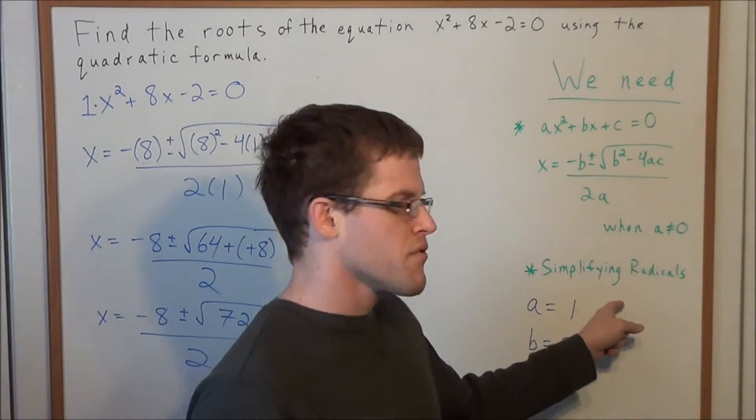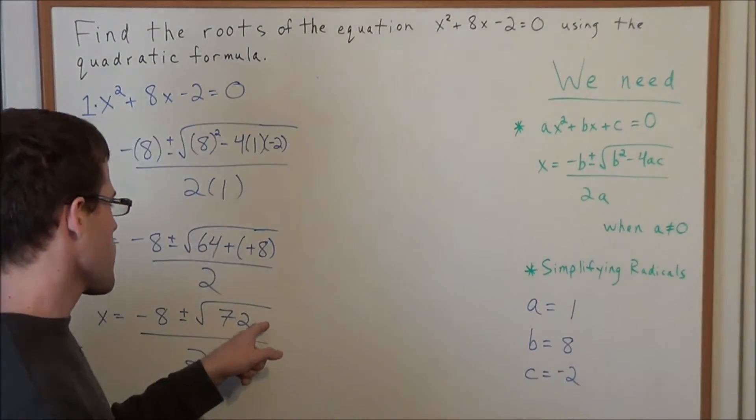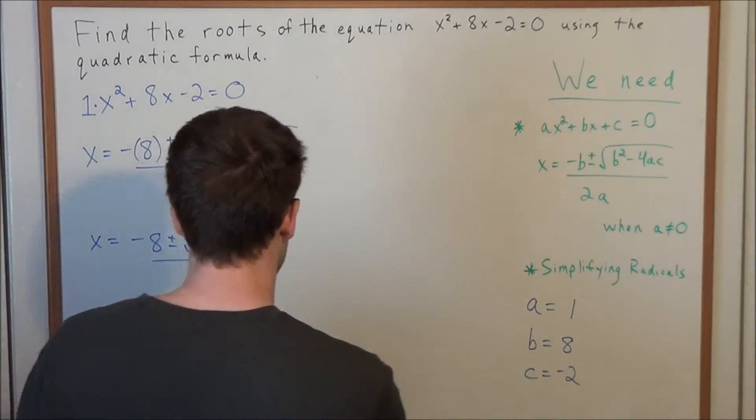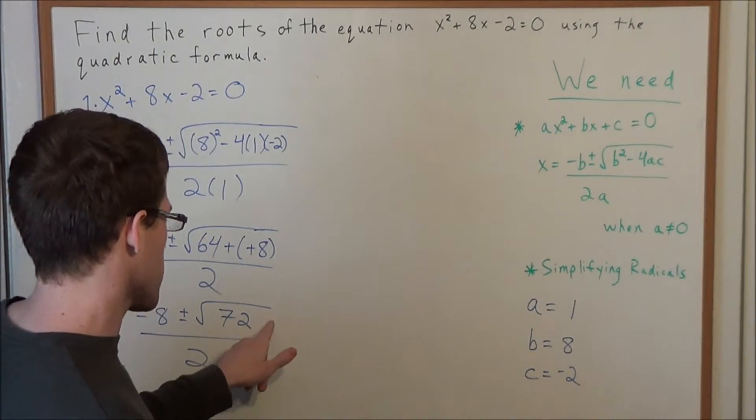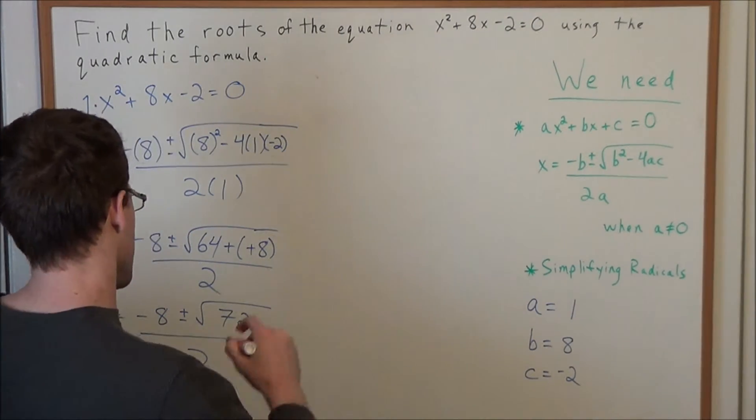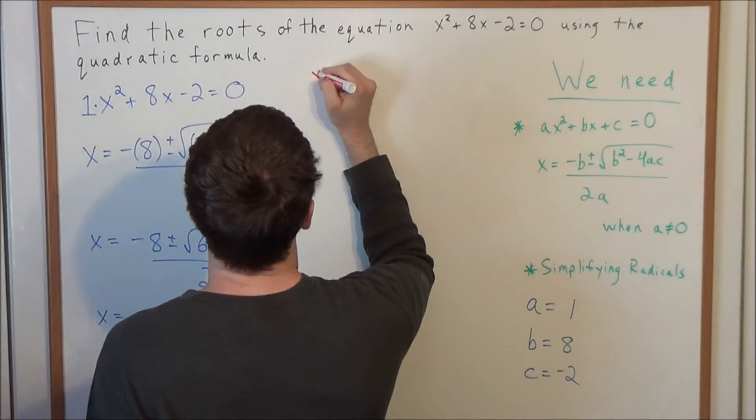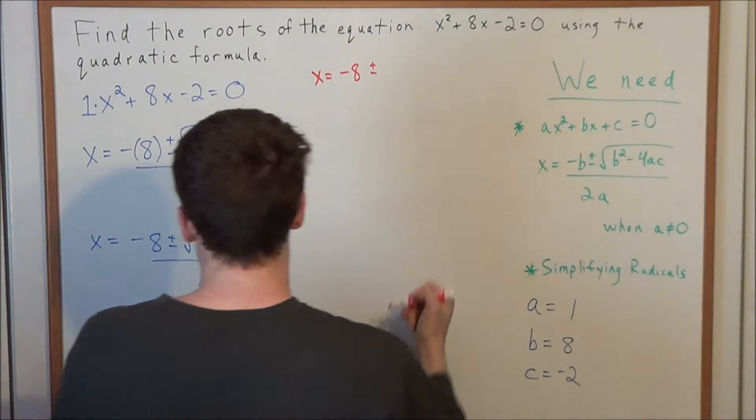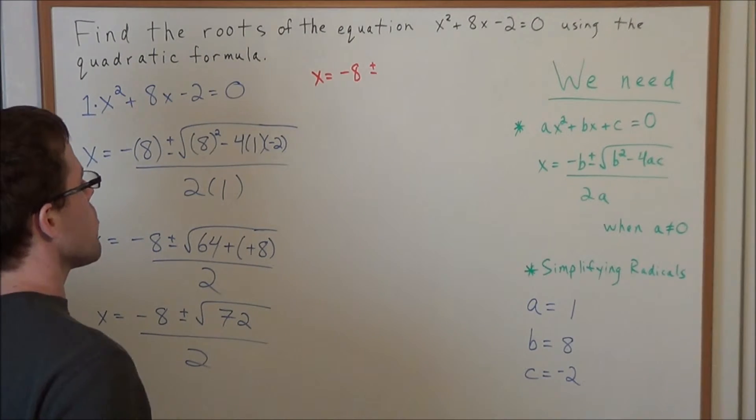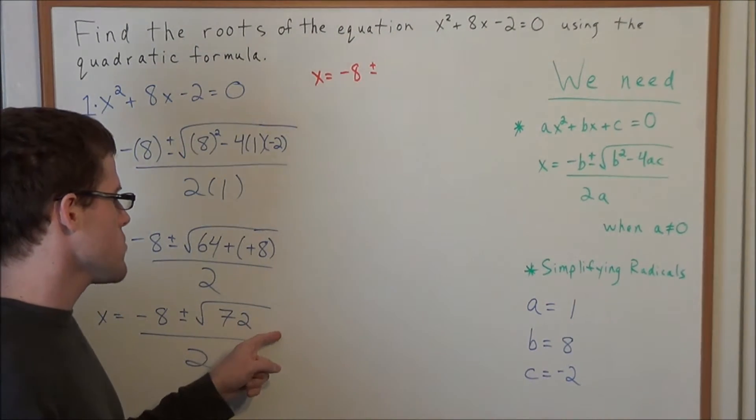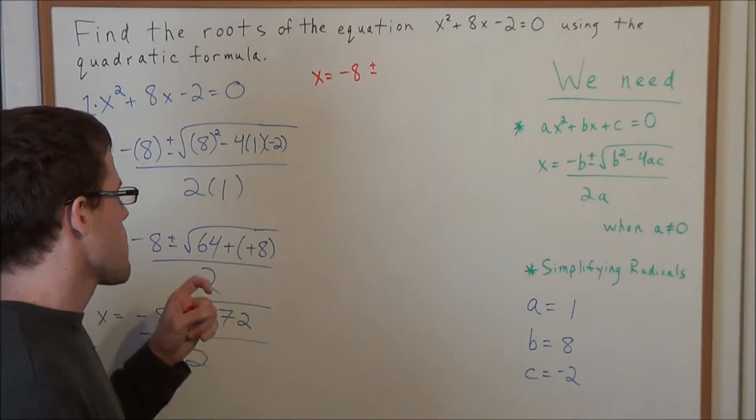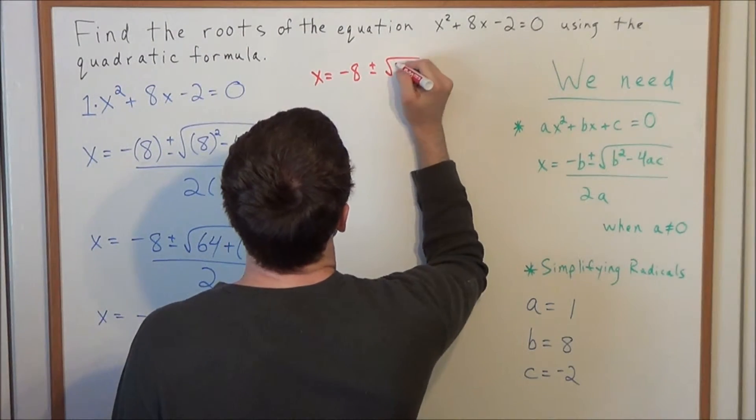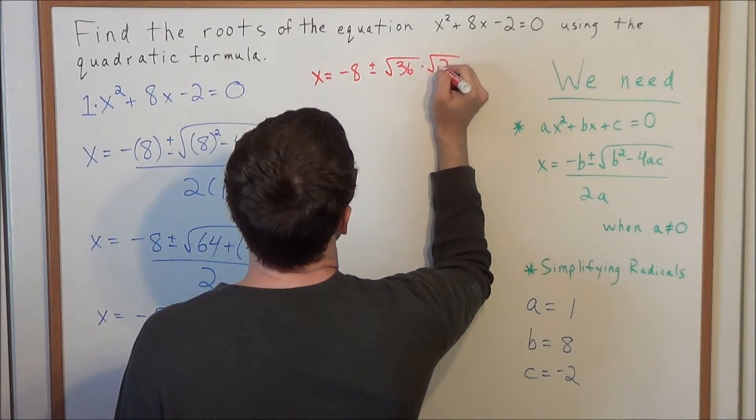So now on the next line, this is where simplifying radicals is going to come in. We need to evaluate the square root of 72. We need to factor it into two pieces, one of which is a perfect square. That's how we work with simplifying radicals. So we have x = -8 ± √72. Well, when we factor and simplify a radical, we want to find the biggest perfect square factor we could find. So in this case, we could use √36 times √2.